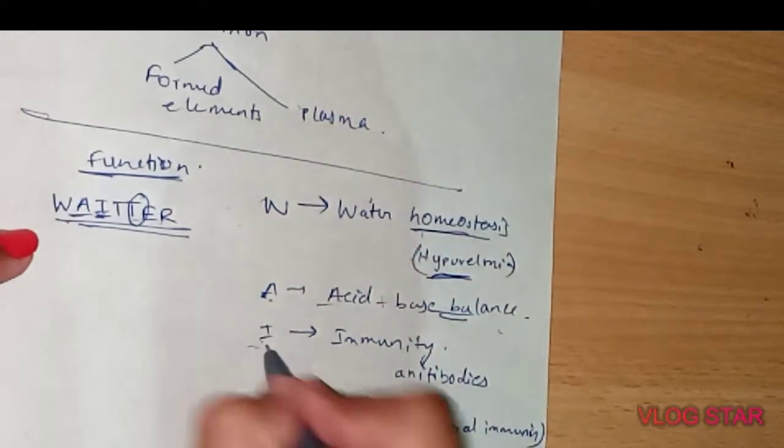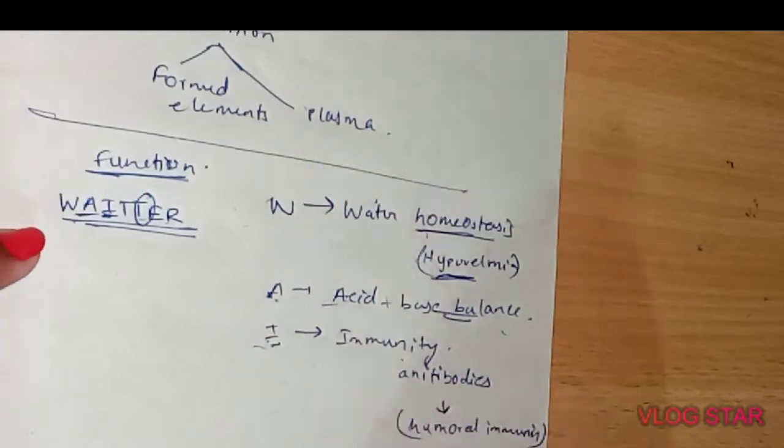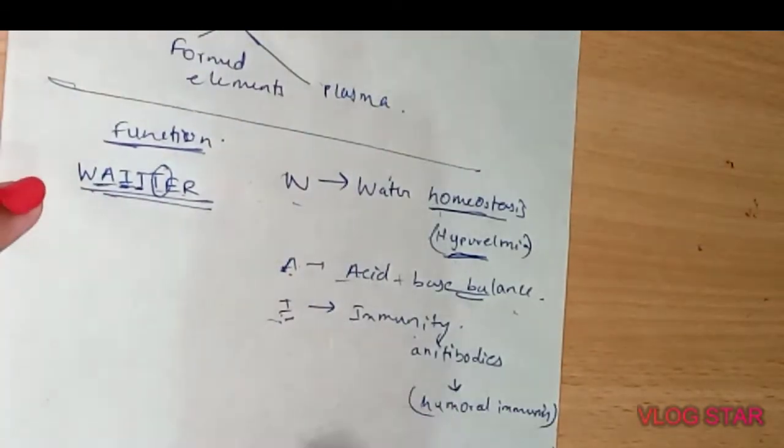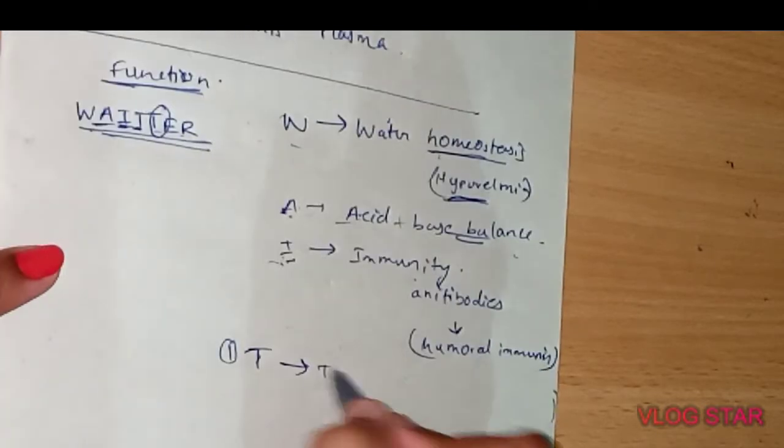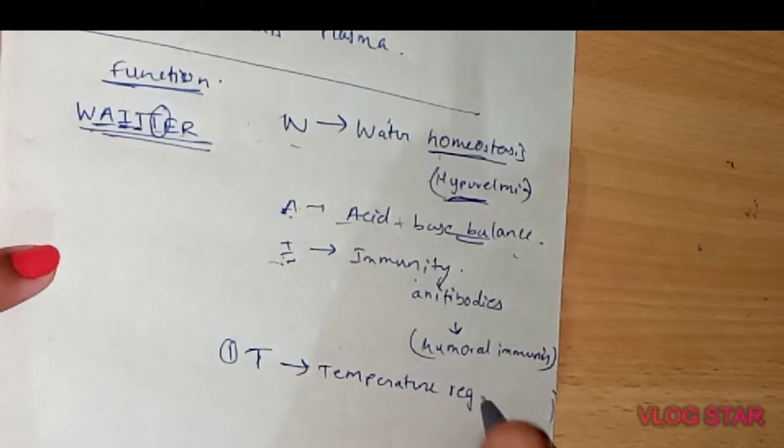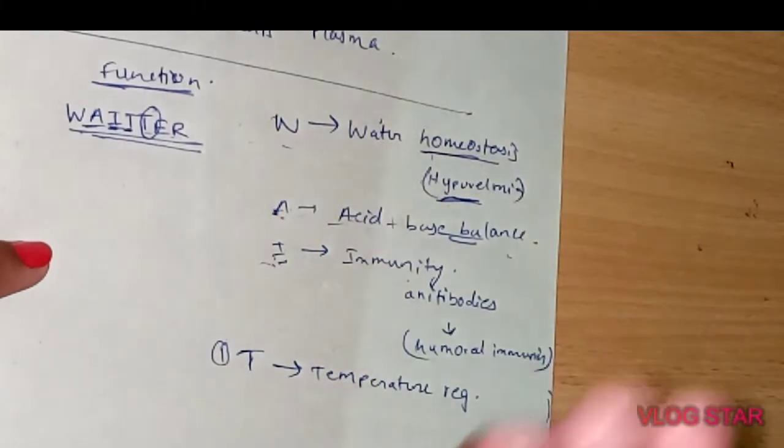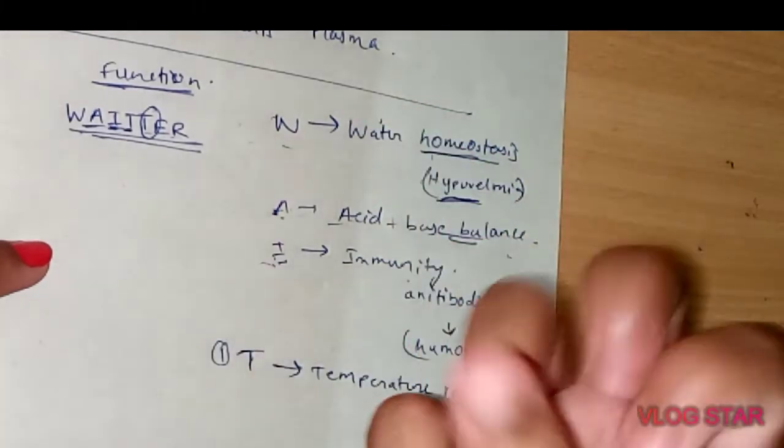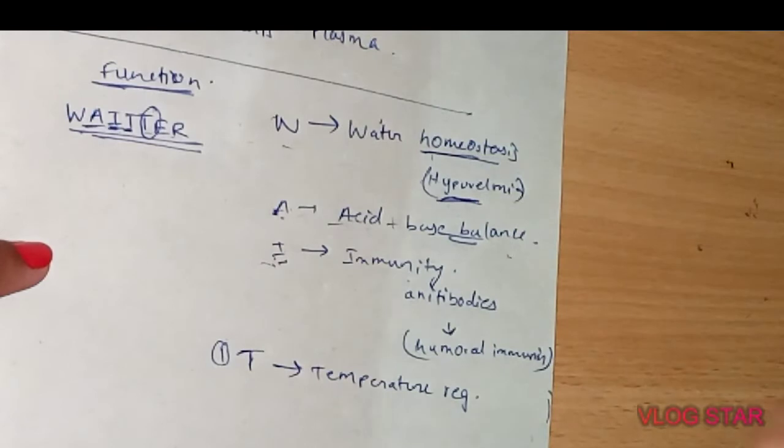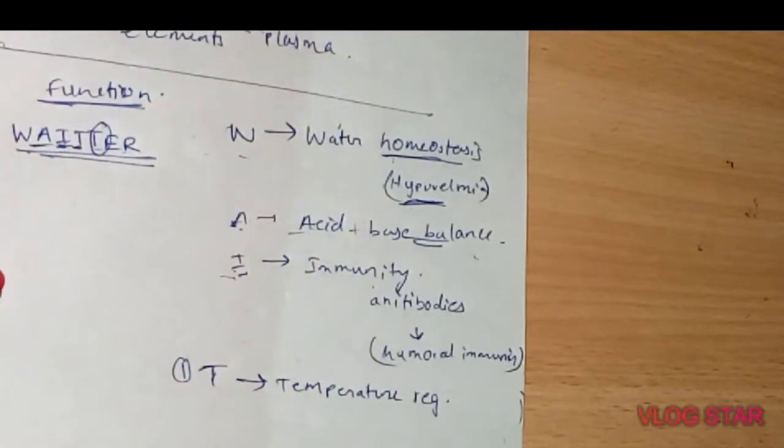So we are done with W-A-I. Next, first T is temperature regulation. Our blood conducts heat from the interior of the body to the surface through blood vessels, and vasoconstriction, which is mainly done by the blood, helps in temperature regulation.